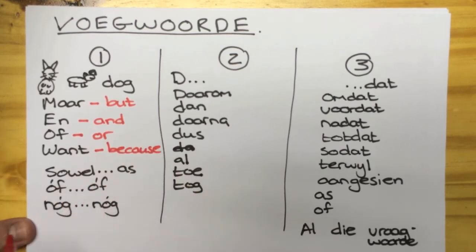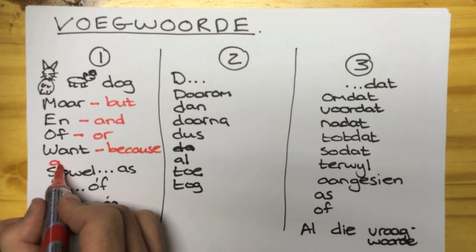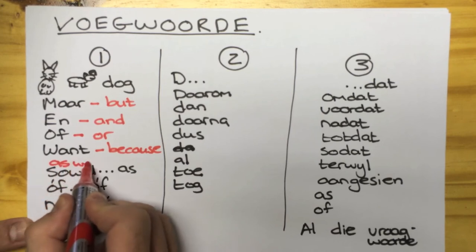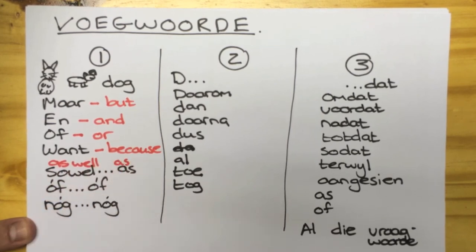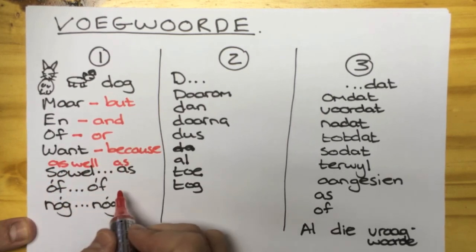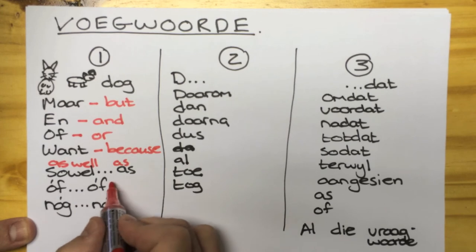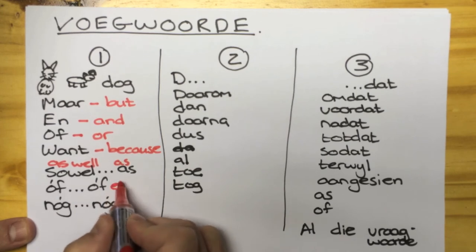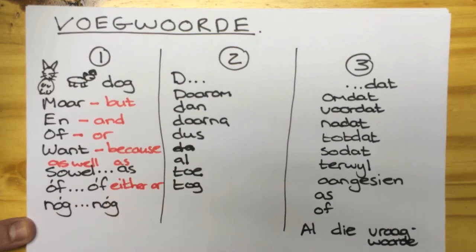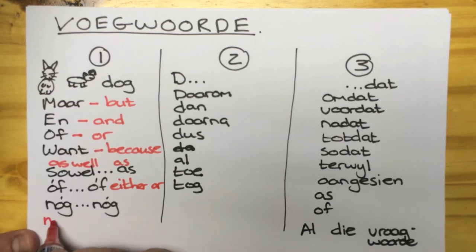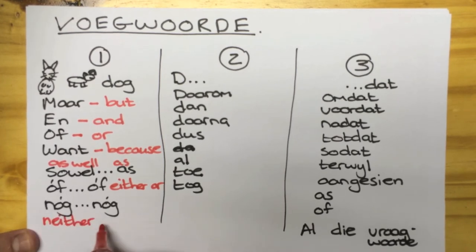Sovel as means as well as. Of...of means either or. Noch, noch means neither nor.